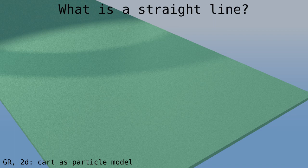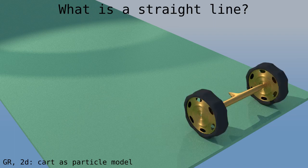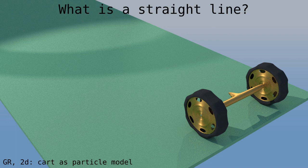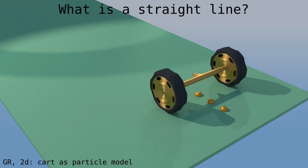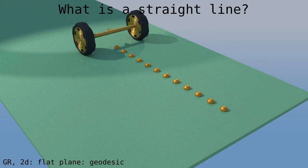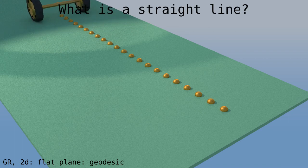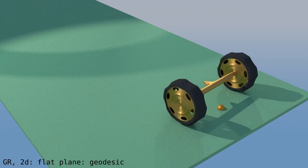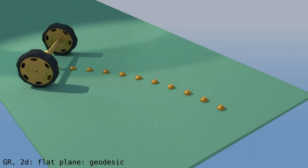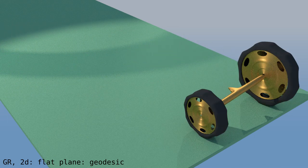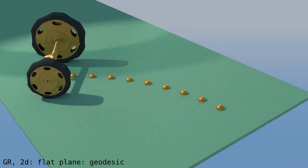First we ask how to draw a straight line. We have this cart, and later we'll think of it as a particle. There are two wheels connected by an axle, and the two wheels are the same size and they rotate at the same speed. And then, of course, the cart moves in a straight line. It drops little crumbs that leave a trail so we can see the path. Now, if one wheel rotates faster than the other, the cart will turn. And if one wheel is bigger than the other, the cart will also turn.